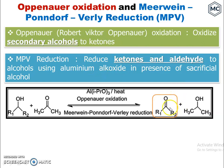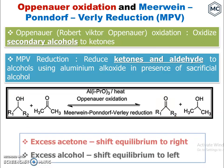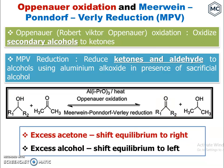MPV reduction is just the reverse — it reduces a ketone or aldehyde to an alcohol using aluminum alkoxide in the presence of a sacrificial alcohol called isopropanol. If you use excess acetone, the equilibrium shifts to the right and you obtain the ketone. If you use excess alcohol, the equilibrium shifts to the left and you obtain the alcohol.